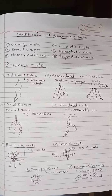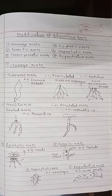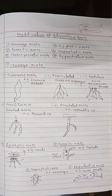The next type is epiphytic roots, also called hygroscopic roots. These roots develop in some orchids which grow as epiphytes upon the trunk or branches of trees. These roots hang freely in the air and absorb moisture with the help of a special sponge-like tissue called velamen. Velamen is a modification of the epidermis. These epiphytic roots are found in the Vanda, or orchid plant.